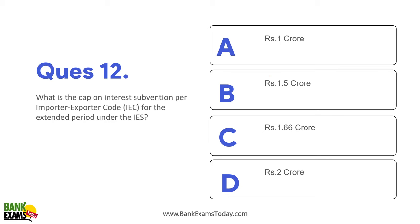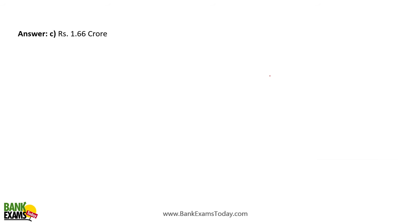What is the cap on interest subvention per Importer Exporter Code (IEC) for the extended period under the IES? The maximum benefit that can be taken under the Interest Equalization Scheme per Importer Exporter Code is 1.66 crore rupees.